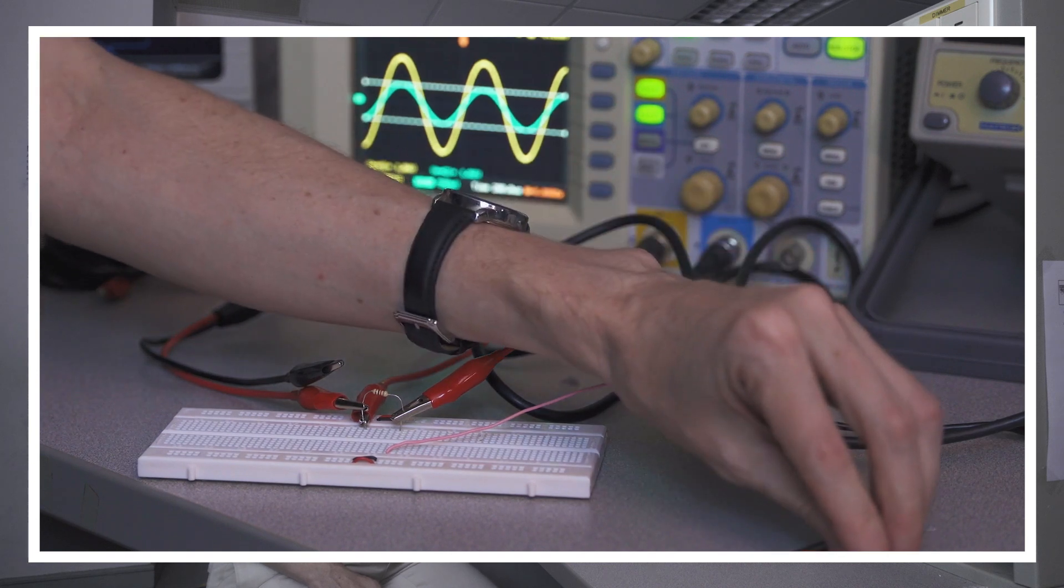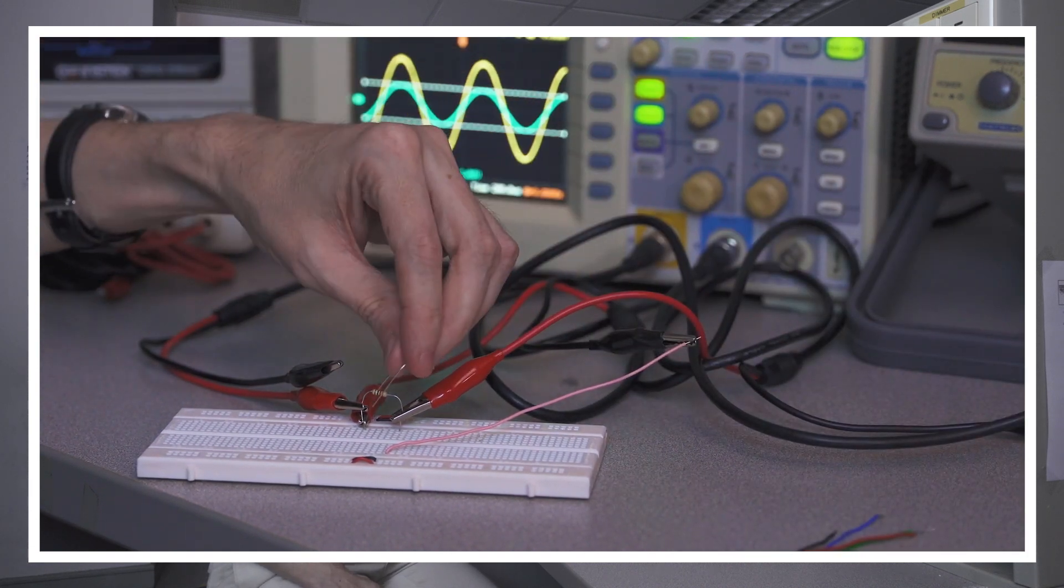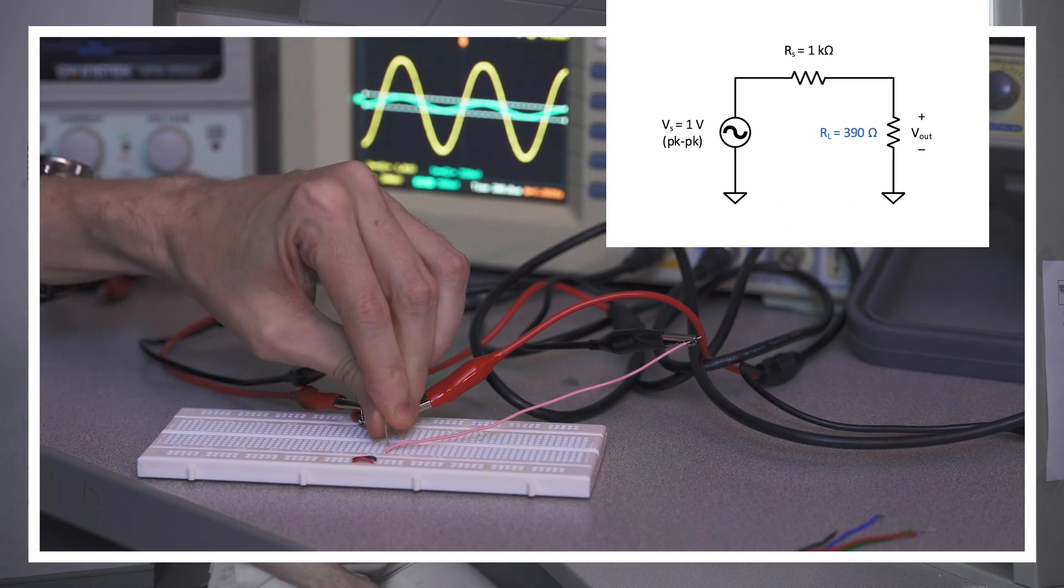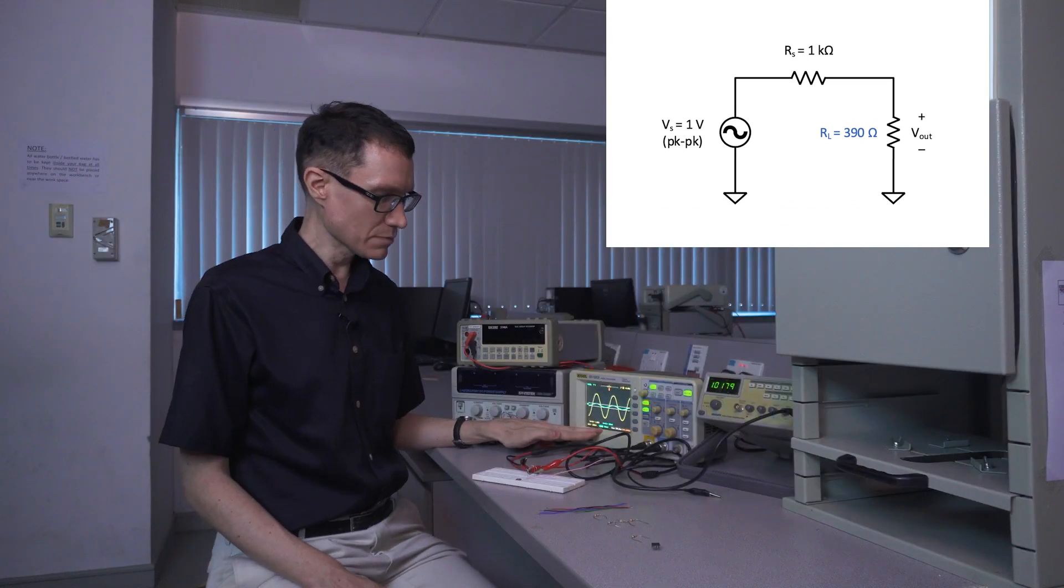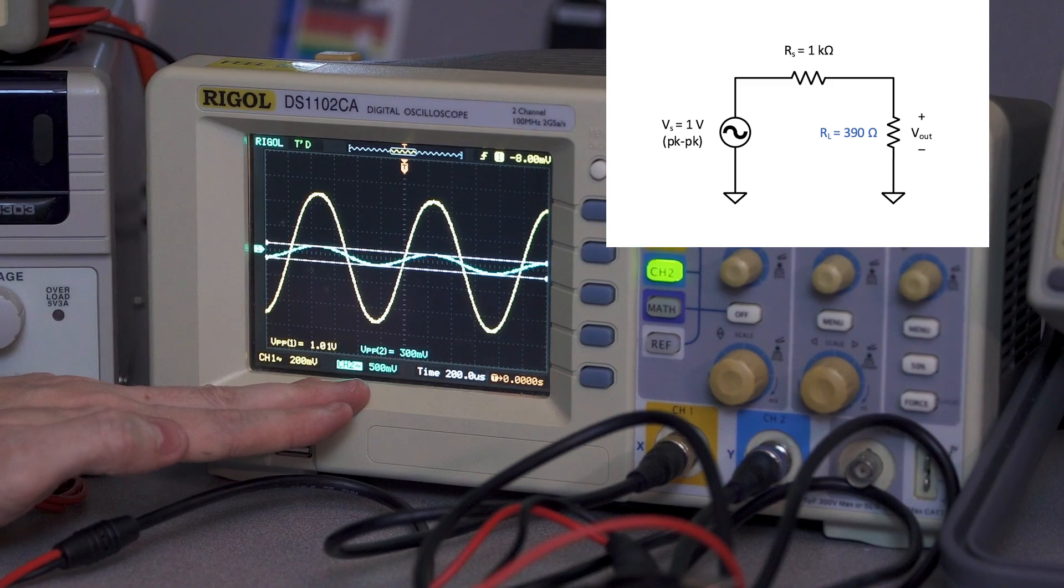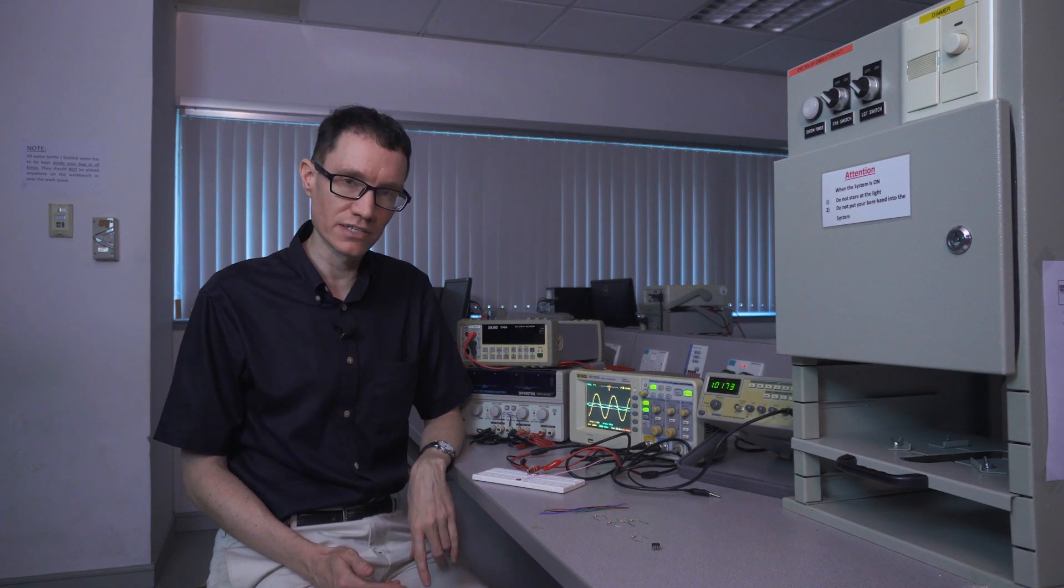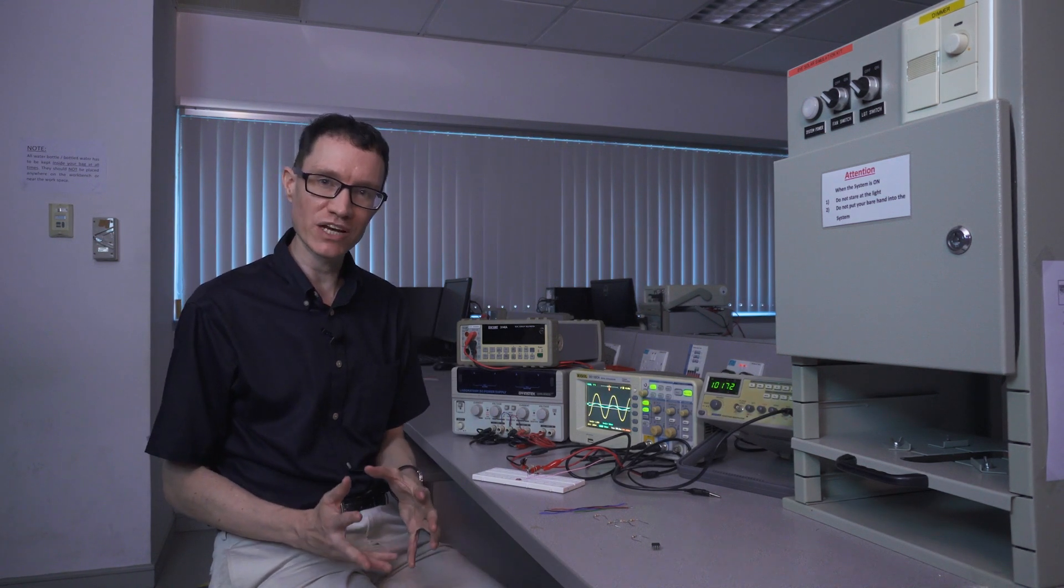Let's see what happens when we reduce the load resistance down to 390 ohms. The output peak to peak voltage is now 0.3 volts. What we can conclude from this demonstration is that the peak to peak output voltage depends on the load resistance. That's obvious from the circuit analysis but it's a perfect situation in which we can use a voltage amplifier.